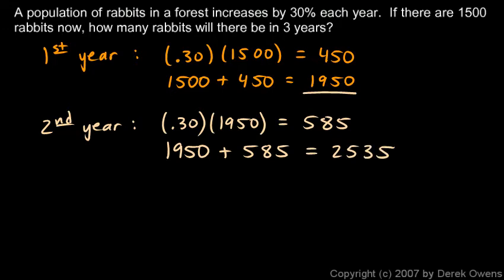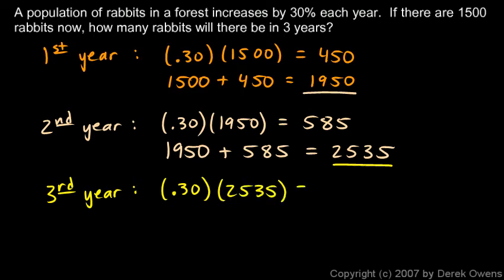Now we'll do the third year. Well, the growth rate is still 30%. Remember we were told that it grows by 30% each year, so in this case I'm going to calculate 30%, or 0.30, times this number, 2535. And that comes out to 760.5. I'm going to round that because obviously partial rabbits aren't born.